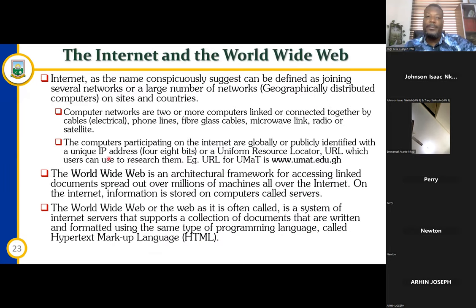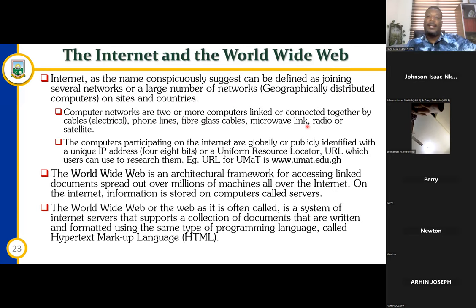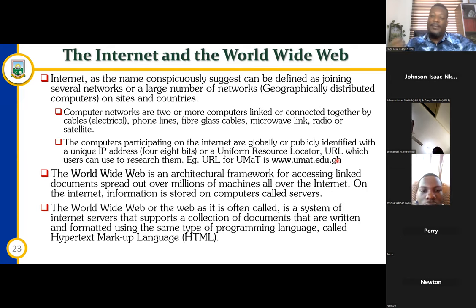The internet, as the name suggests, can be defined as joining several networks — a large network of networks. It is geographically distributed computers coming together to form a network. Computer networks are two or more computers linked or connected together by cable, phone, fiber, microwave, or radio satellites. The computers participating on the internet are globally and publicly identified with a unique IP address. The router or access point will give you an IP address, which uniquely identifies you on the network.